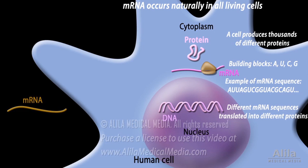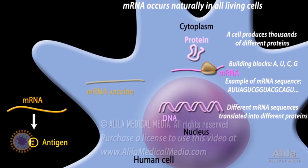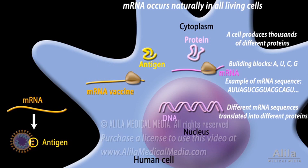RNA vaccines contain mRNA strands that have the information for making the viral antigen, usually a viral spike protein. Once inside the body's cells, the mRNA is translated into protein — the antigen — by the same process the cells use to make their own proteins. The antigen is then displayed on the cell surface, where it is recognized by the immune system. From here, the sequence of events is similar to that of a conventional vaccine.